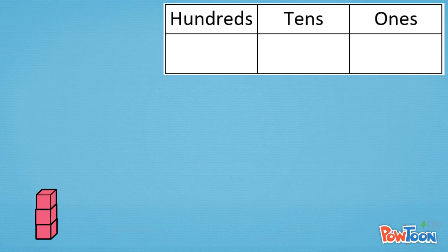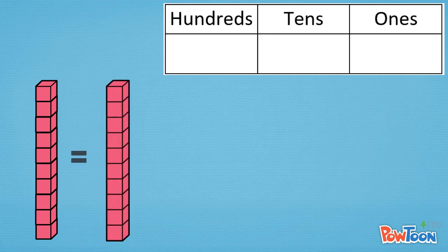I can line up ten ones in a row. Now I put one ten next to my row of ten ones. How are ten ones like one ten? They have the same value.